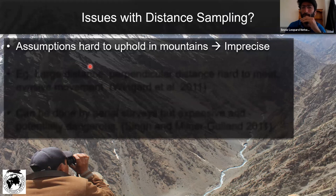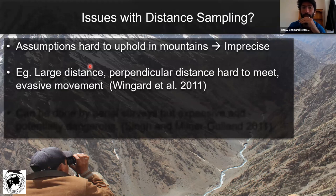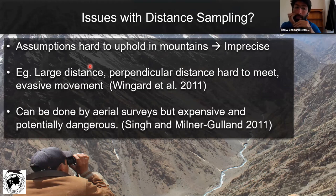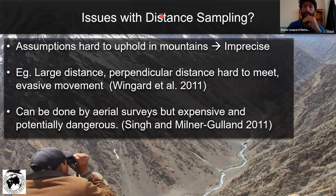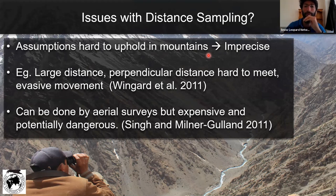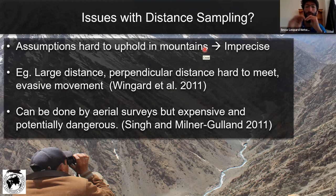Issues with distance sampling: many of its assumptions are hard to uphold in the mountains, making them imprecise. There are too many large distances, perpendicular distances are hard to measure, and there is animal movement. Some studies show distance sampling can be done well with aerial surveys when people are flying over, but those are extremely expensive, dangerous, and limited. References will be shared. I'm happy to give them specific to distance sampling or methods in general.